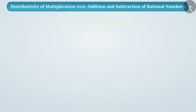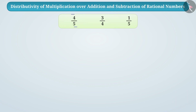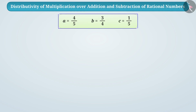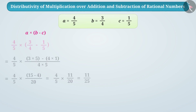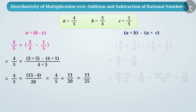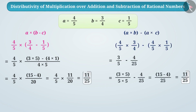Now pause this video, take your notebook and pen, and write down three rational numbers. Let the first rational number be a, the second be b, and the third be c. Find the result by placing values in a × (b − c), then find the result by placing values in a × b − a × c. Did you get the same result in both cases?